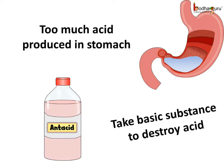When we eat very spicy or too much food, our stomach produces too much acid to digest that food. Hence we feel uncomfortable. We have an ache in the stomach or a sour taste in the mouth. This problem is called acidity. Taking antacid or any other basic substance like baking soda can help to reduce acidity.